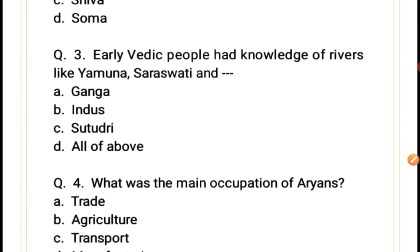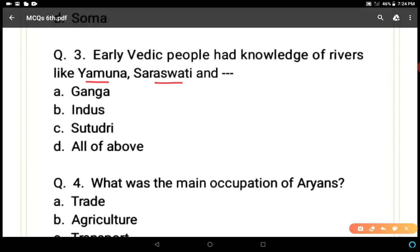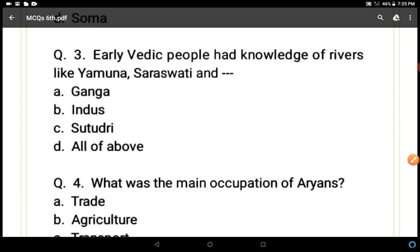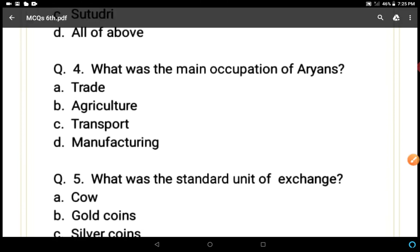Question 3: The early Vedic period had knowledge of which rivers? Options: Yamuna, Saraswati, Yamuna and Saraswati, or all of above. Ganga, Indus, Sutudri — all these rivers were mentioned in the Rigveda, so D, all of above, is the correct answer.